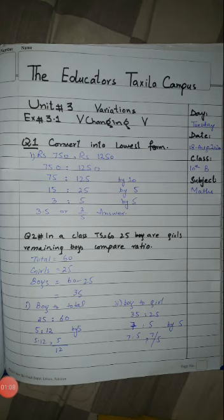Then divide by 5 again to get 3 and 5. This cannot be divided further, so the answer in lowest form is 3:5. Next, in a class of 60 total students, 25 are girls and the remaining are boys. We need to compare the ratios.